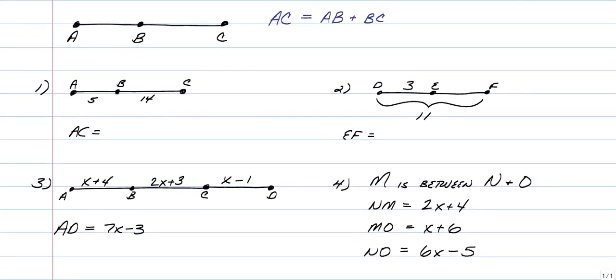So if we were to look at the next couple of examples, they're fairly simple. If we know that AB is 5 and BC is 14, how long would AC be? And AC has a length of 19. We just add those two together.